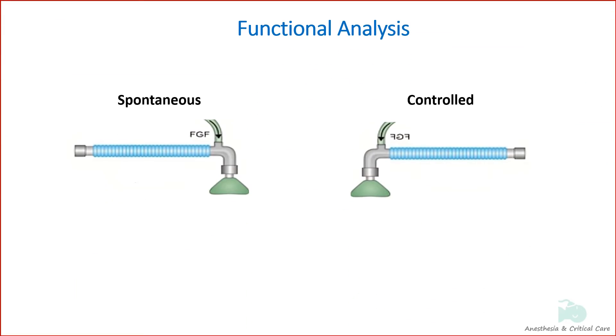For spontaneous ventilation, the expiratory limb is open to the atmosphere. Controlled ventilation can be performed by intermittently occluding the expiratory limb and allowing the fresh gas to inflate the lungs.